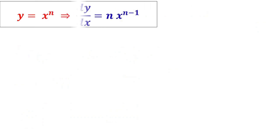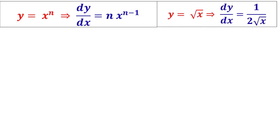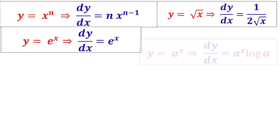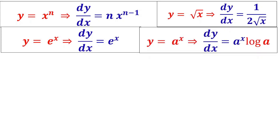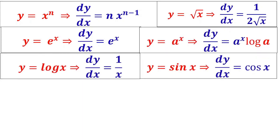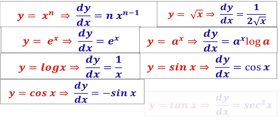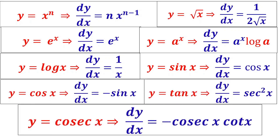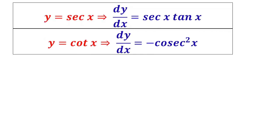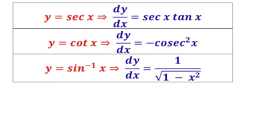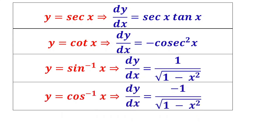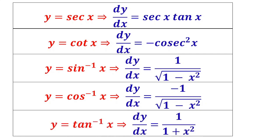Let us quickly review the standard differentiation formulas. For xⁿ it is n·xⁿ⁻¹; for √x it is 1/(2√x); eˣ is eˣ; aˣ is aˣ·log a; log x is 1/x; sin x is cos x; cos x is −sin x; tan x is sec²x; cosec x is −cosec x·cot x; sec x is sec x·tan x; cot x is −cosec²x; sin⁻¹x is 1/√(1−x²); cos⁻¹x is −1/√(1−x²); and tan⁻¹x is 1/(1+x²).